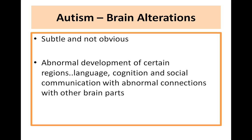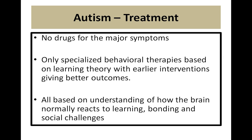Regarding brain alterations in autism, the changes are not obvious. There might be abnormal development of central regions related to language, cognition, and social communication, and there might be some abnormal connections with other brain parts.